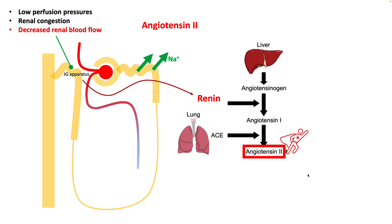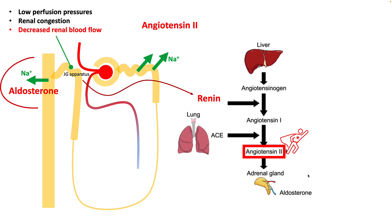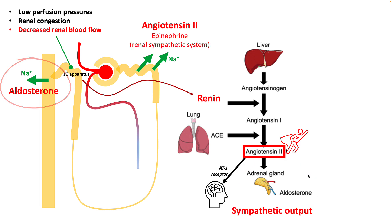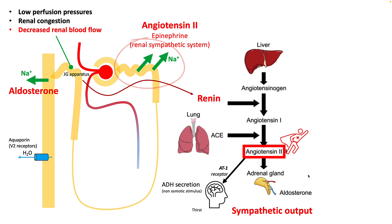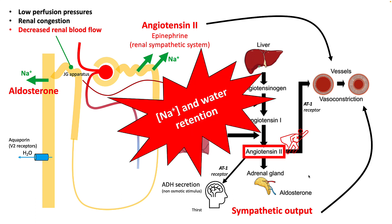Angiotensin 2 is the most important peptide in this event. It causes sodium retention in the proximal convoluted tubule, and it also stimulates your adrenal glands to produce aldosterone, which further results in sodium and water retention from your collecting ducts. Angiotensin 2 also stimulates your sympathetic output, which helps further reabsorb sodium in the proximal convoluted tubules, and can also stimulate ADH secretion and the thirst mechanism.